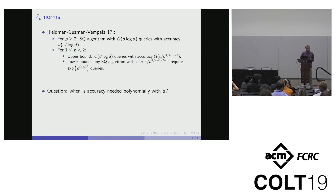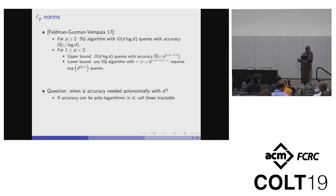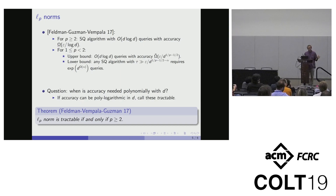The question is: what is it about a particular norm space that requires accuracy to be polynomial in the dimension? For p greater than two, they were able to achieve only a logarithmic loss. For this talk, when algorithms can achieve accuracy that is only polylogarithmic in d, I'll call these norms tractable. So the main result of Feldman, Guzman, and Vempala can be stated as: all L^p norms are tractable if and only if p is greater than two.